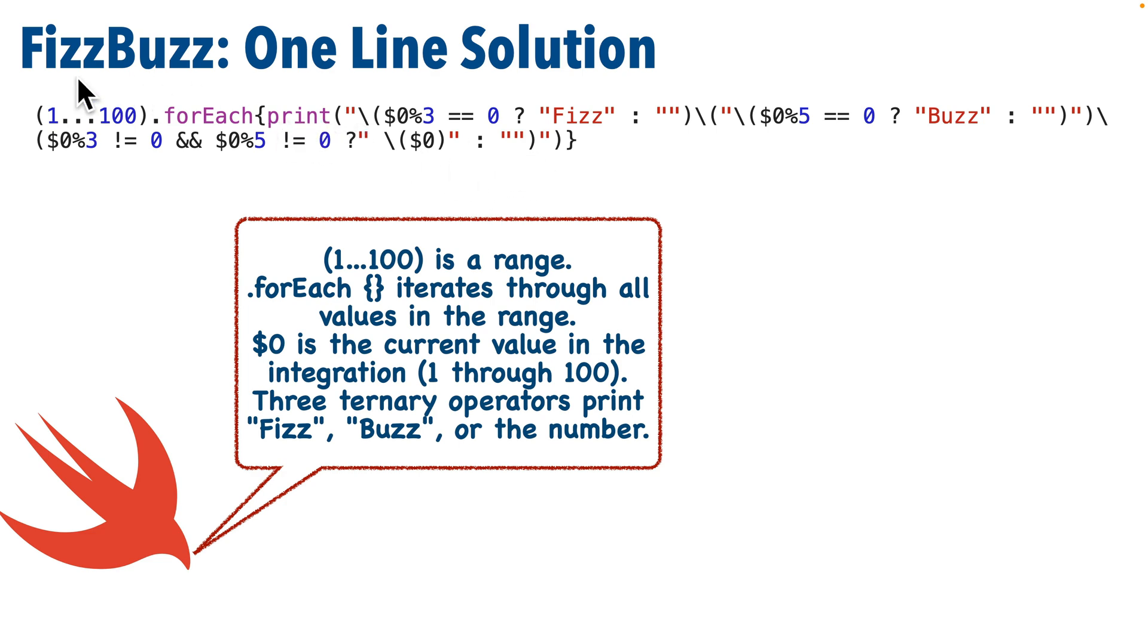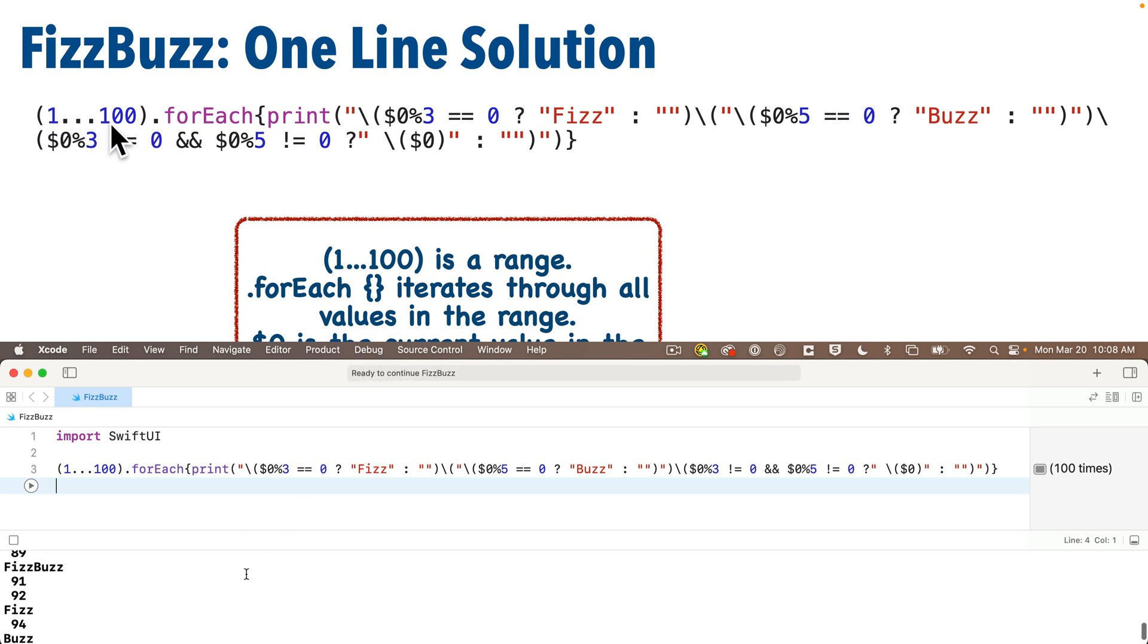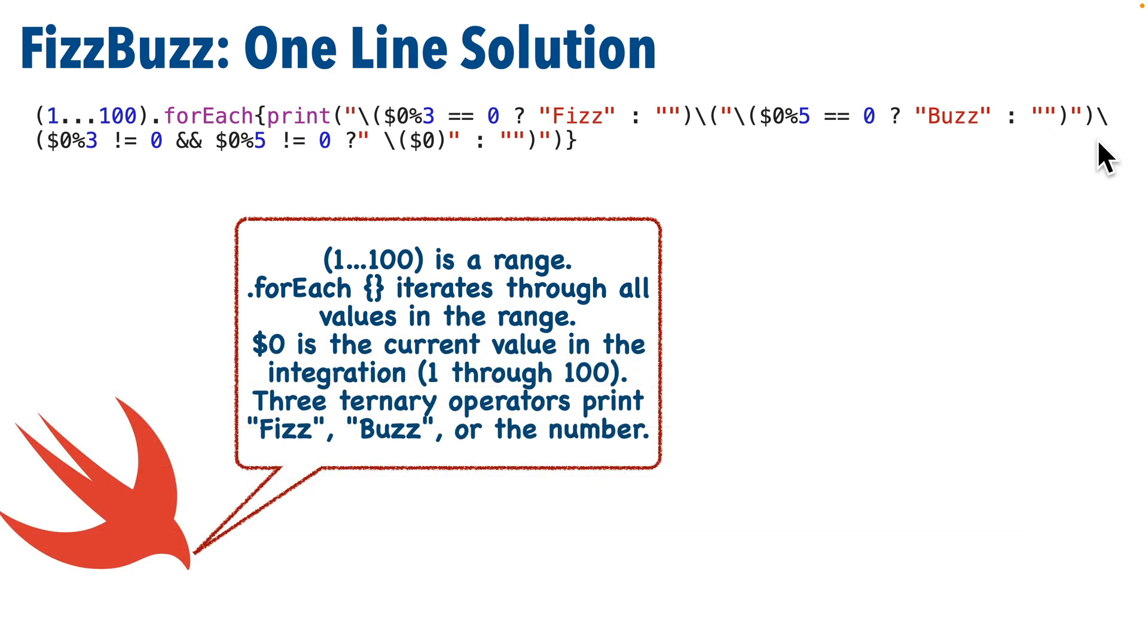And inside we have pretty much the same print statement that we showed on the prior slide. This is a single line here. It's just line wrapped so that you can see it all in the larger font and hopefully read it a little bit better. It is just one line of code. And the dollar sign zero that we see inside represents the current value we get from our range as we iterate through the range. So we run the code inside the curly braces, the closure, 100 times. The first time dollar sign zero is 1, the second time dollar sign zero is 2, all the way to the hundredth time where dollar sign zero is 100. One line, tough to read. Your team won't like you if you code like this, but it is an admirable demonstration of what you can do in Swift.